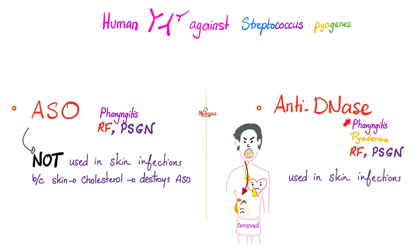Conversely, anti-DNase B antibodies are helpful for diagnosing throat infection, rheumatic fever, nephritic syndrome, and also pyoderma, erysipelas, cellulitis, necrotizing fasciitis, and any other skin disease caused by strep — because cholesterol does not inhibit DNase.